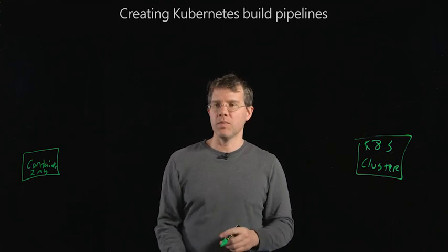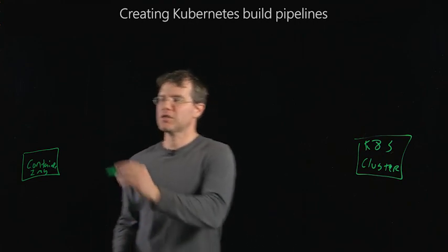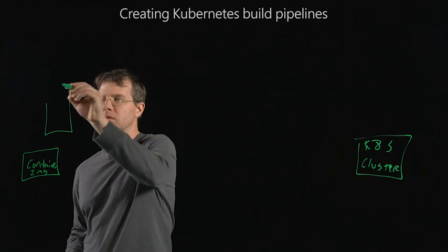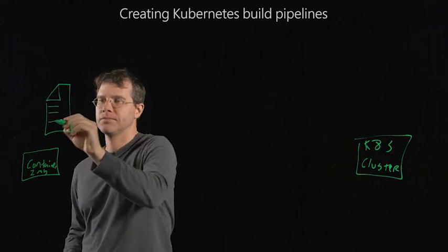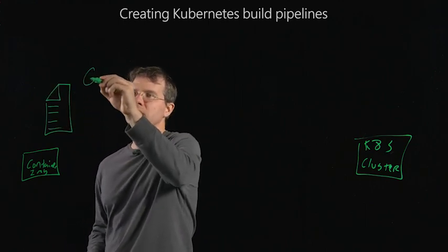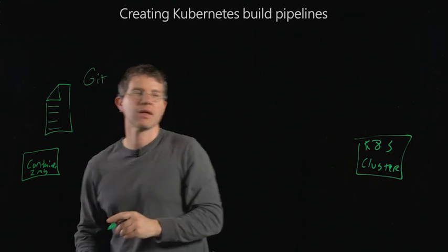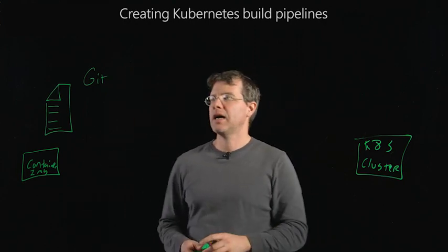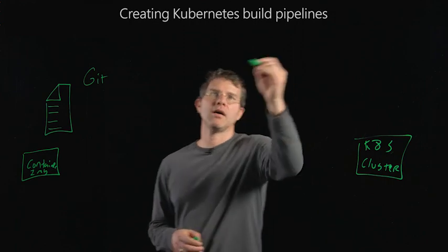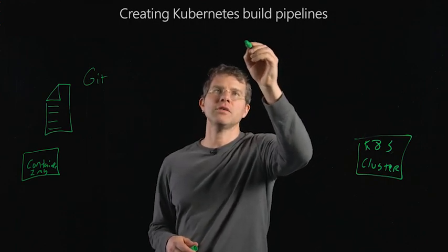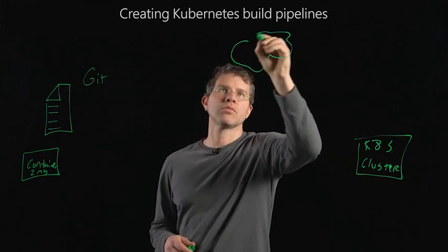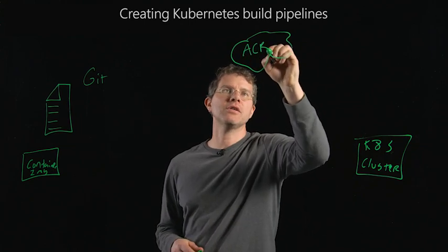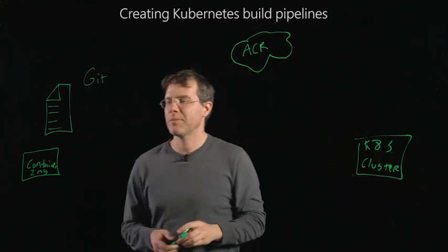You don't even necessarily start with a container image — you actually start with source code. So you're going to have source code in a Git repository somewhere, and you have your Kubernetes cluster over here. You're going to have a container registry, probably up in the cloud, like the Azure Container Registry or whatever container registry you happen to be using.